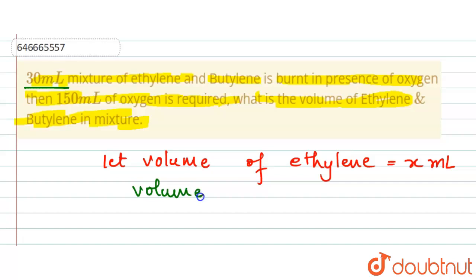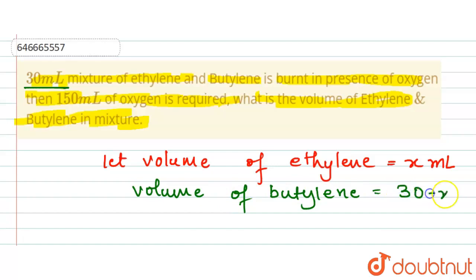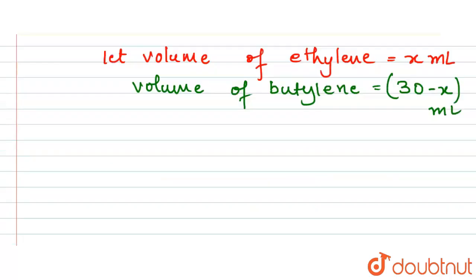So the volume of butylene will be 30 minus x ml.